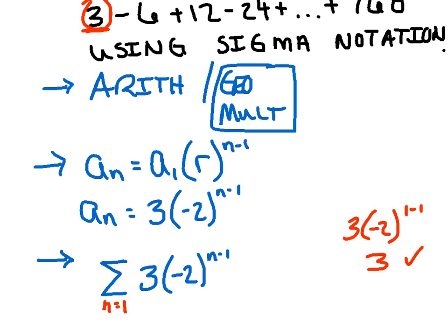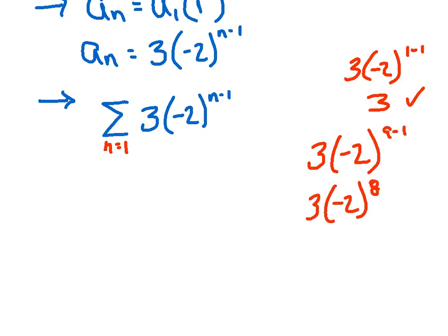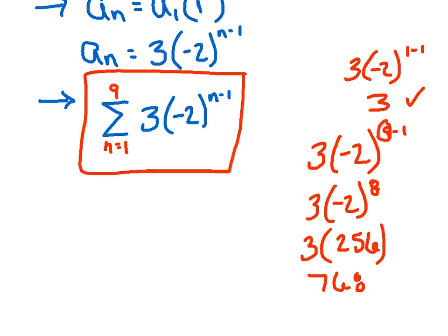The harder part is figuring out the ending value. Whatever you substitute for n has to produce 768. Through trial and error — just roll up your sleeves and start plugging numbers in. After a few attempts, I tried n equals nine: negative two to the eighth power is positive 256, and three times 256 is 768. So n equals nine was the right number. We take our sigma notation all the way up to nine, and this is the final answer.